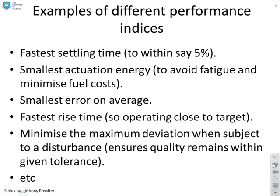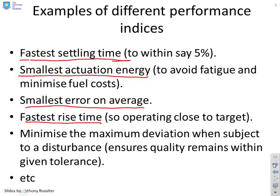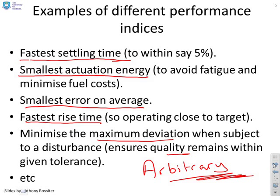And what you need to remember is this definition is a tool that is used to enable a unique solution. It simply makes life easier. So what are the different indices that you might choose to use? You might say, right, I'm going to define best as the one which has the fastest settling time. Or I'm going to use it as the one that has the smallest actuation energy in order to avoid fatigue and minimise fuel costs. Or I might say, the one that has the smallest error on average. Or the one that has the fastest rise time so that I get close to the target as quickly as possible. Or the one that minimises the maximum deviation when I have a disturbance hitting the system because that ensures that my quality remains within a given tolerance and so on.